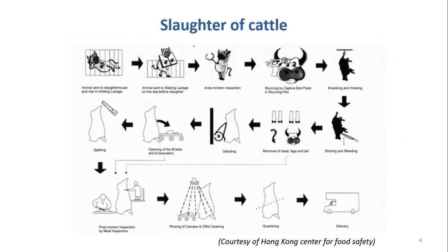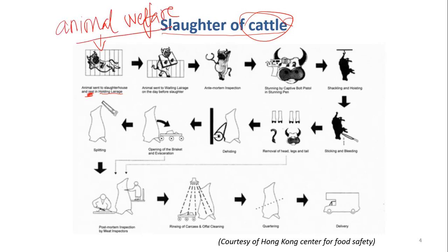Now we have the basic steps in slaughter of cattle — cows and buffaloes. Here is a place where the animal can rest, called a holding pen, where the animal rests and feels relaxed before slaughter. We call this animal welfare — you should treat them well and not torture them before you kill them. But also, if you let them relax, that will give you better quality meat. And here is the place where the animal walks to the final area, and we again have ante-mortem inspection.